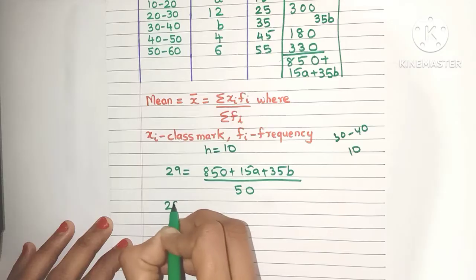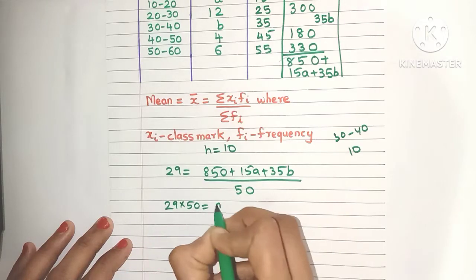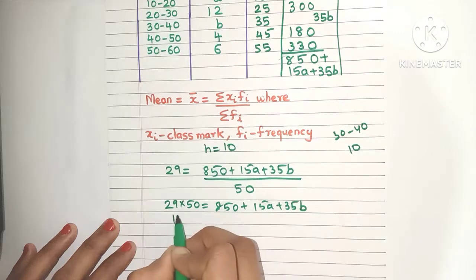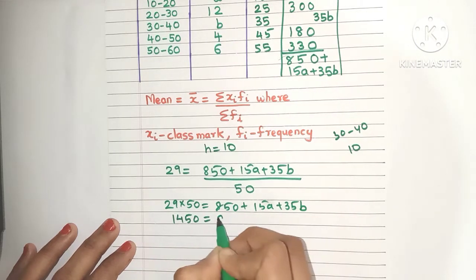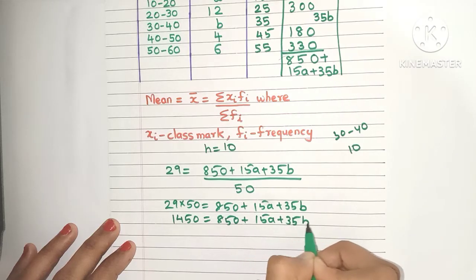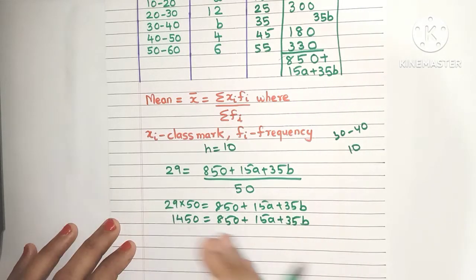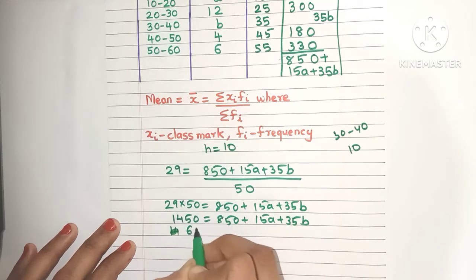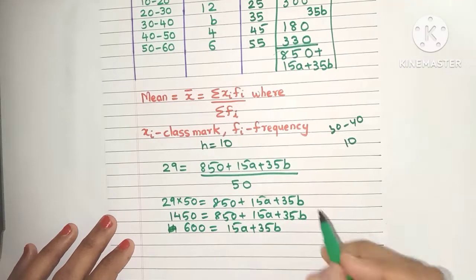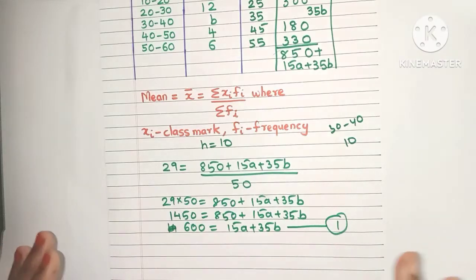Now it's just a little bit of algebra. Bring the 50 to the other side to get 29 times 50. Here you'll get 1450 equals this term as it is. Bring the numbers to one side. 1450 minus 850 gives 600 equals 15a plus 35b. This is our first equation.